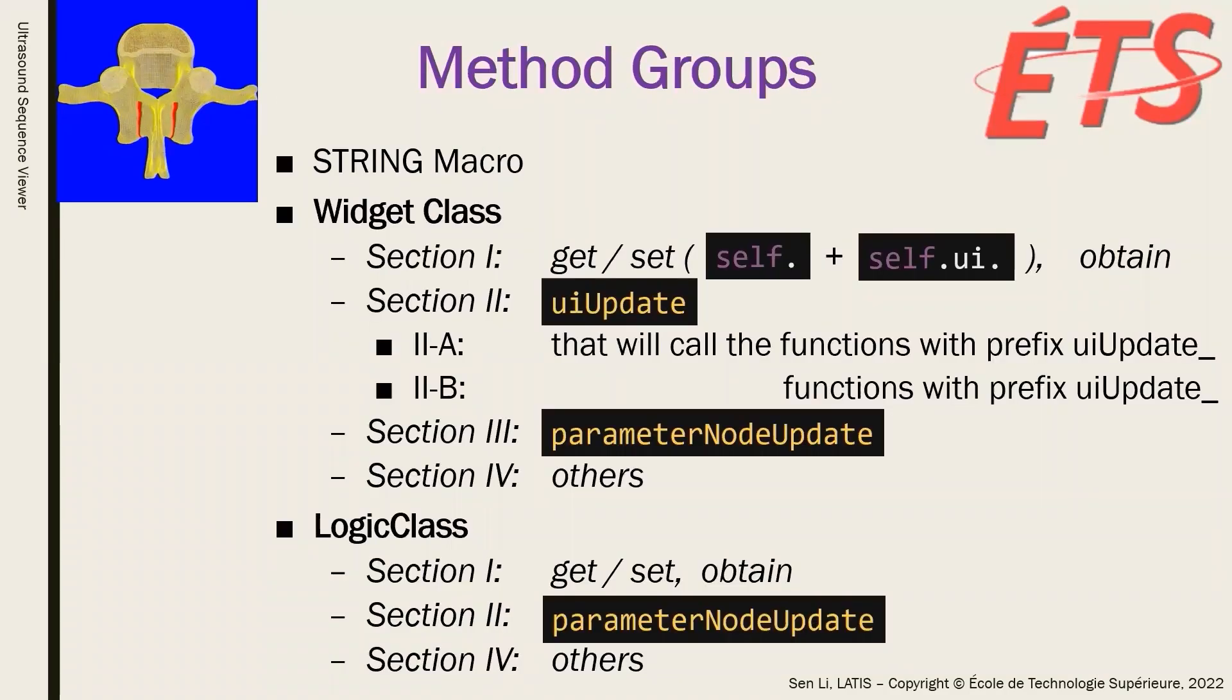After the code style, it's easy to explain the method groups in our module. To arrange the methods for convenient code reading and programming, we put the string macro on the top of the Python script right after the library import.